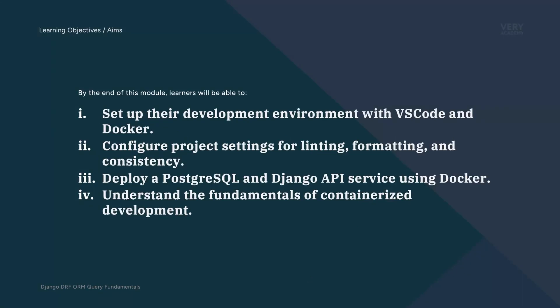By the end of this module, you would have learned how to create the development environment and have Visual Studio Code and Docker Desktop installed and ready. You would have also deployed a Postgres SQL and Django API service using Docker and Docker containers. I'll also take you through some of the fundamentals of containerized development, including learning a little bit about Docker images, containers, and volumes.